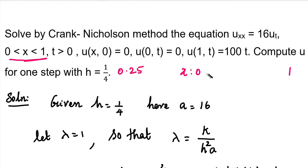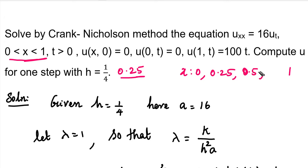We use h equal to 1/4 to divide the interval. Starting from 0 and adding h each time: x₀ = 0, x₁ = 0.25, x₂ = 0.5, x₃ = 0.75, x₄ = 1. So x has 5 values total, and the initial value of t is 0.